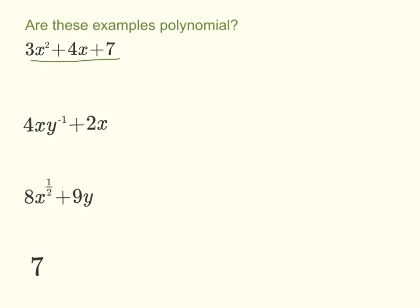So here we got three terms in our first example, all positive whole number exponents. There's a one there even though we don't see it, so yeah that checks out. Yes, that's a polynomial.